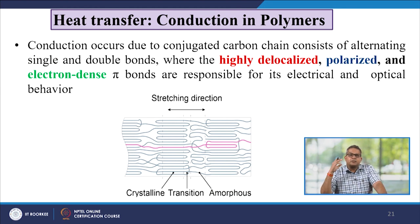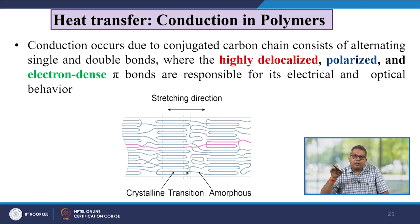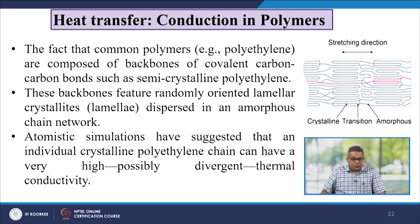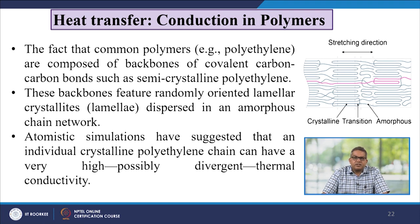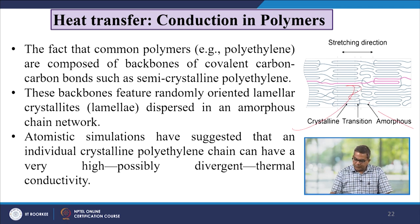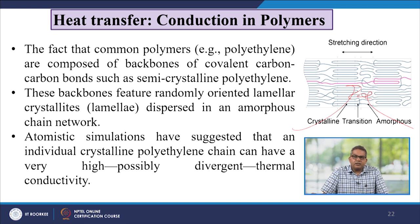Conduction in polymers occurs due to conjugated carbon chains consisting of alternating single and double bonds, where highly delocalized pi bonds are responsible for electrical and optical behaviour. Common polymers like polyethylene are composed of backbones of covalent carbon–carbon bonds; semi-crystalline polyethylene features randomly oriented lamellar crystalline regions dispersed in an amorphous chain network. Atomistic simulations have suggested that an individual crystalline polyethylene chain can have a very high possible divergent thermal conductivity.